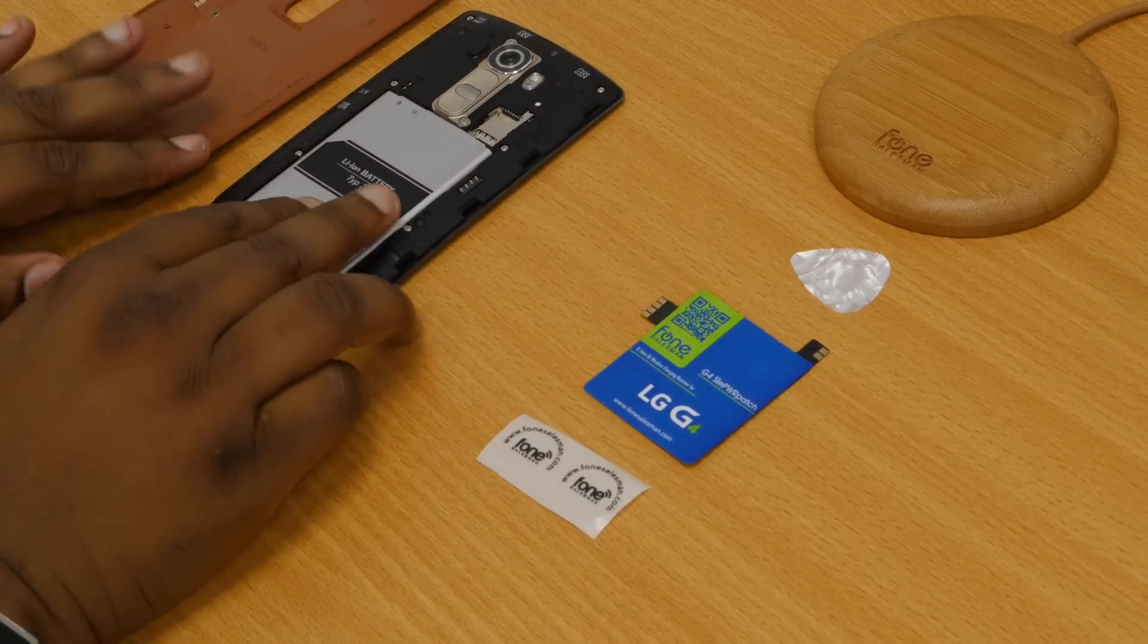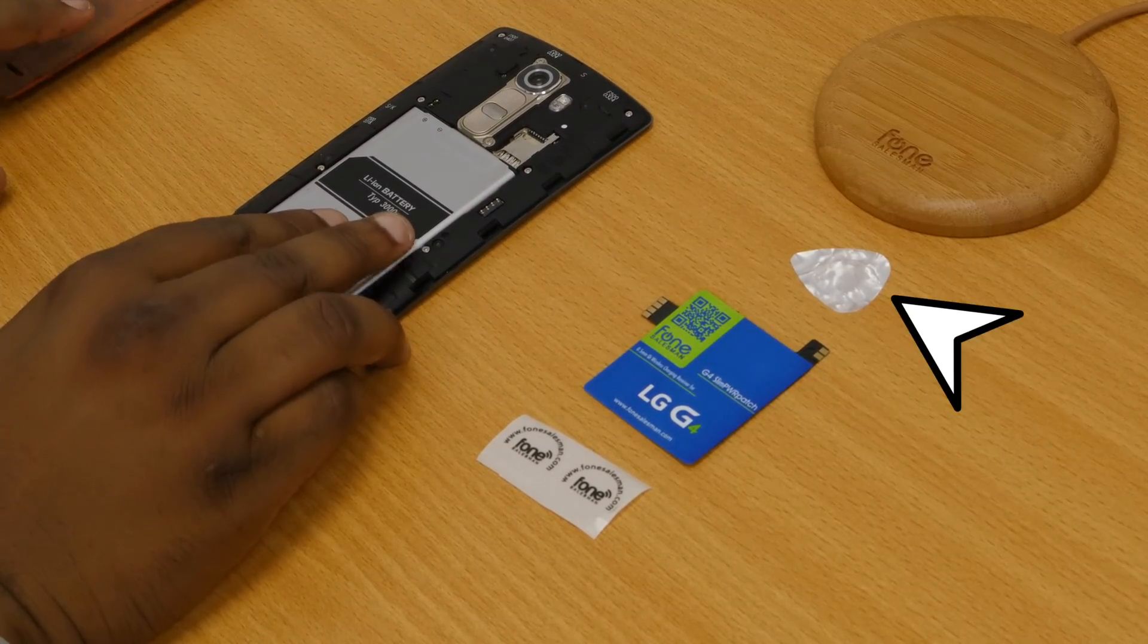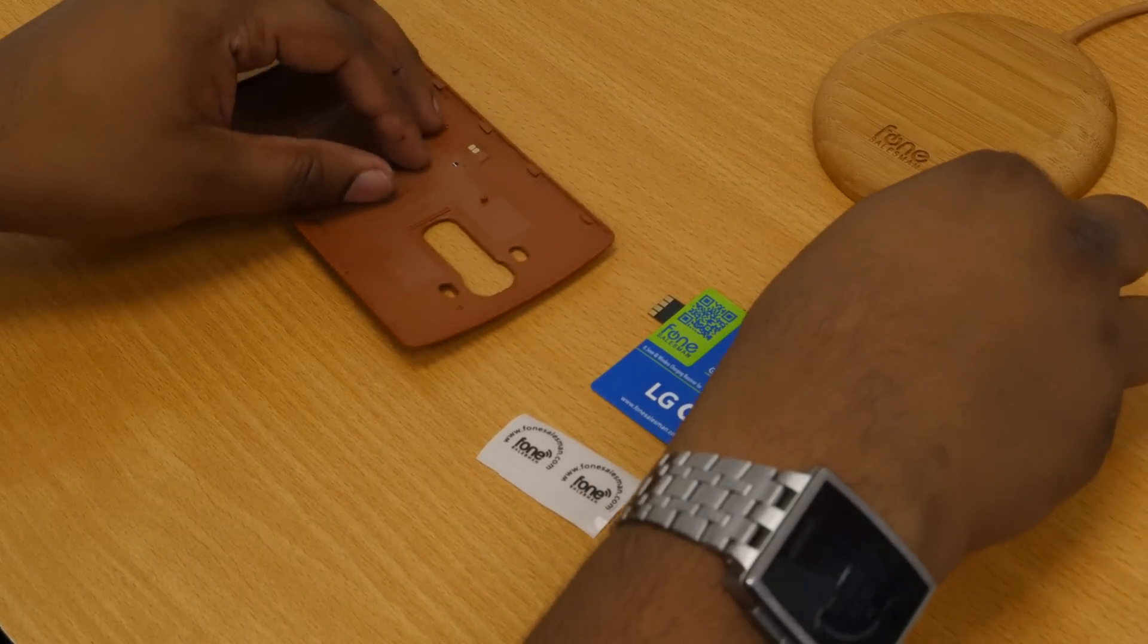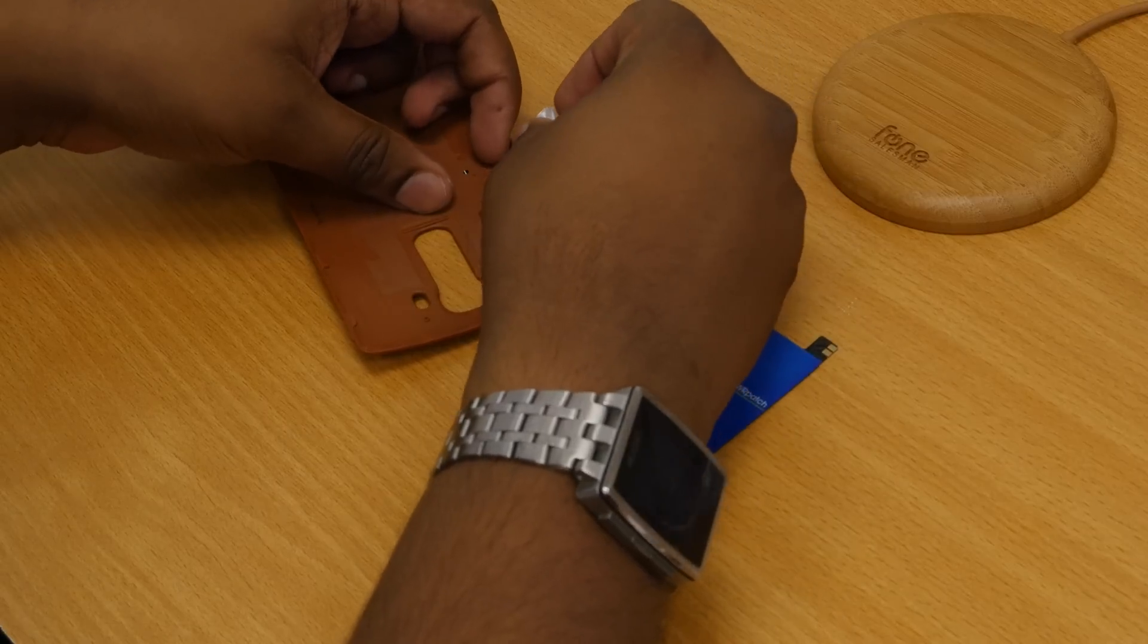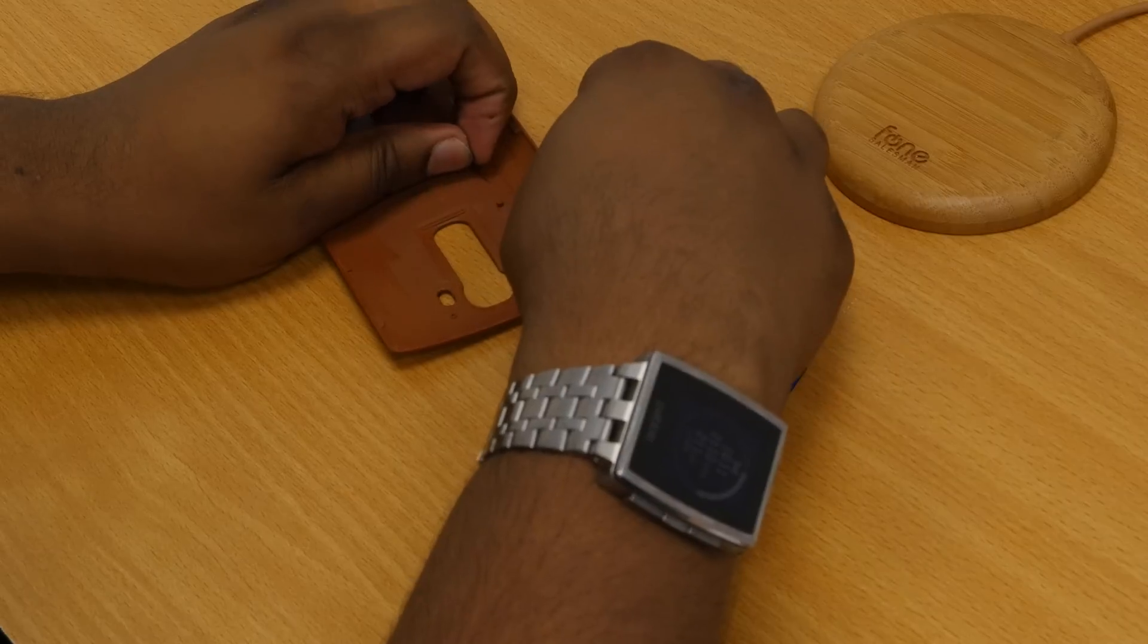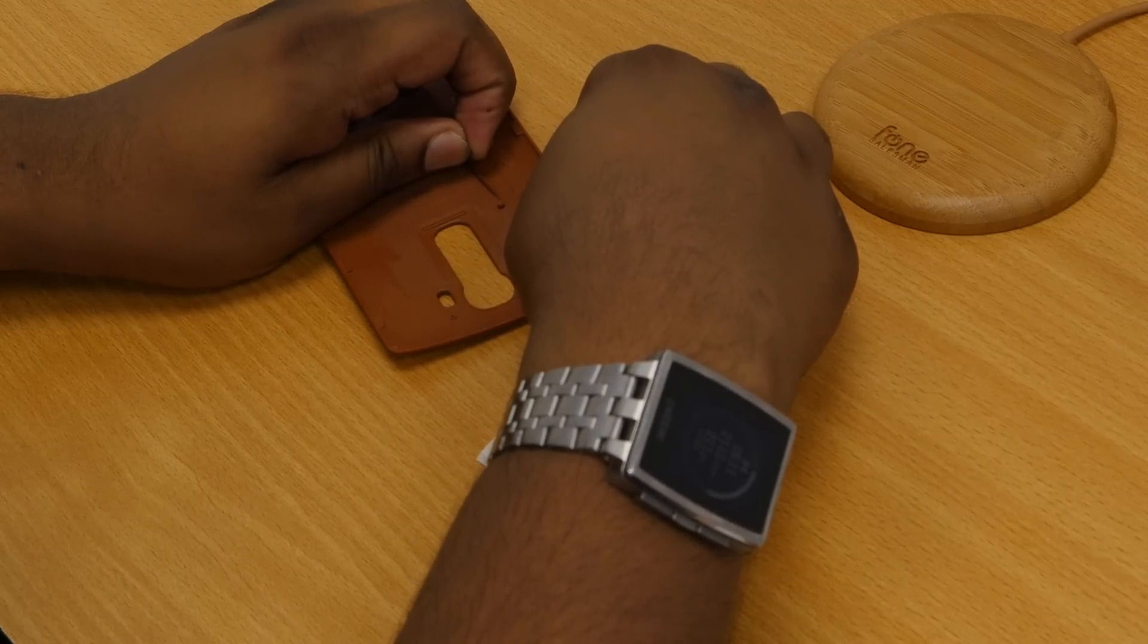Next we need to use the pick tool to remove the NFC antenna sticker. But do not worry about losing the NFC functionality. The G4 Slim Power Patch will also provide NFC functionality on top of wireless charging capabilities.